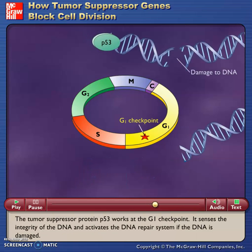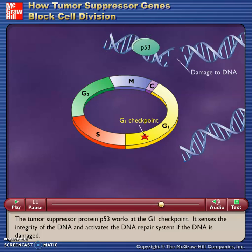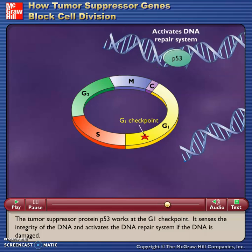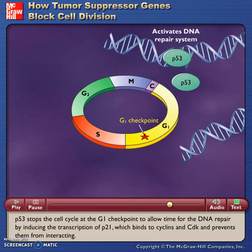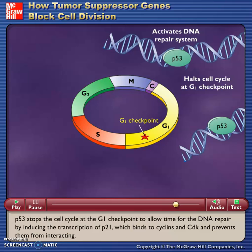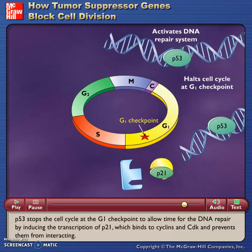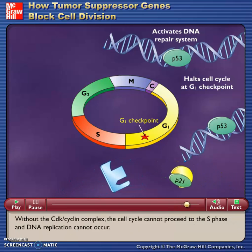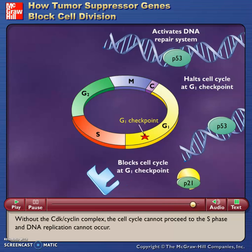The tumor suppressor protein P53 works at the G1 checkpoint. It senses the integrity of the DNA and activates the DNA repair system if the DNA is damaged. P53 stops the cell cycle at the G1 checkpoint to allow time for DNA repair by inducing the transcription of P21, which binds to cyclins and CDK and prevents them from interacting. Without the CDK-cyclin complex, the cell cycle cannot proceed to the S phase and DNA replication cannot occur.